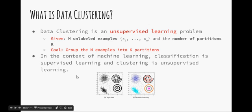We need to group the M examples into K partitions. In the context of machine learning, classification is supervised learning and clustering is unsupervised learning. The great difference is labeling.